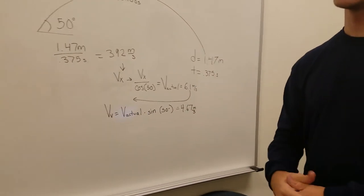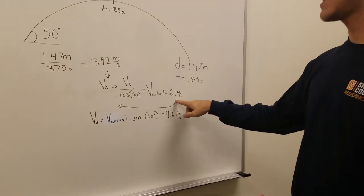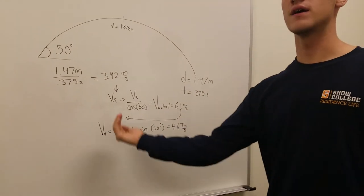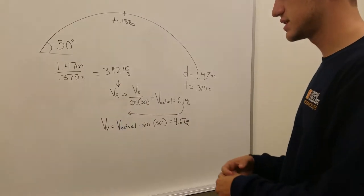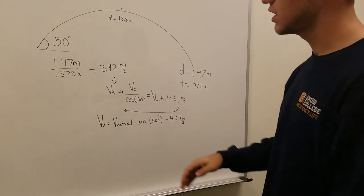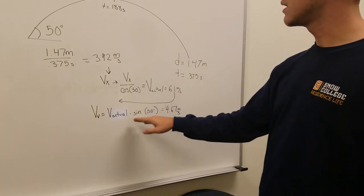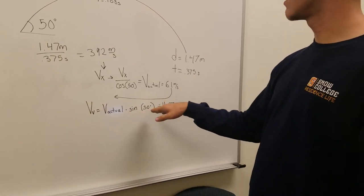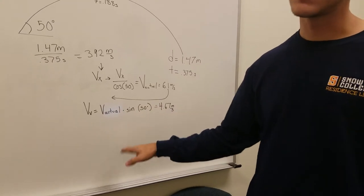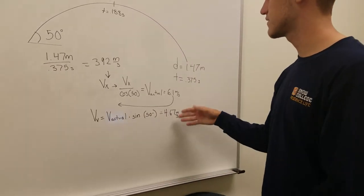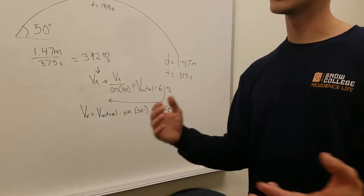Now we have almost all the components we need. We used this actual velocity to figure out our vertical velocity. Using a different trigonometric function, we decided that vertical velocity would equal the actual velocity multiplied by the sine of 50 degrees. It came out to be a total of 4.67 meters per second.